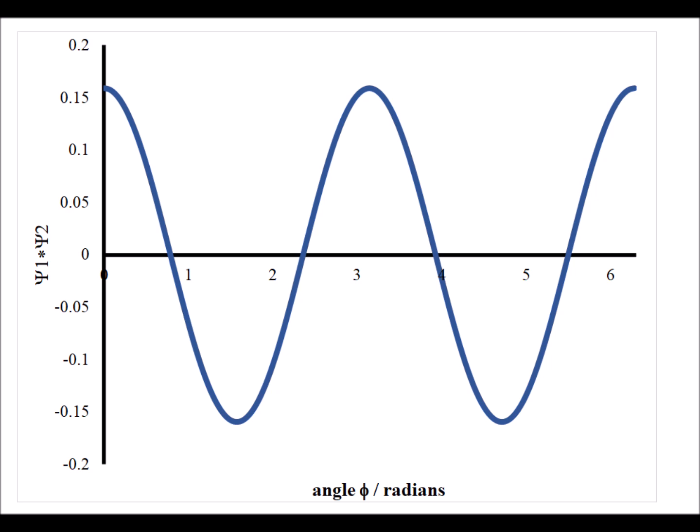Here we have the product when m sub l is equal to 0 and equal to 2. Again, the area above the x-axis we show as a dark gray, the area below the x-axis as a light gray, and that if we add up these areas between φ being equal to 0 and 2π, we notice that they exactly cancel out, showing that those two eigenfunctions are orthogonal to each other.